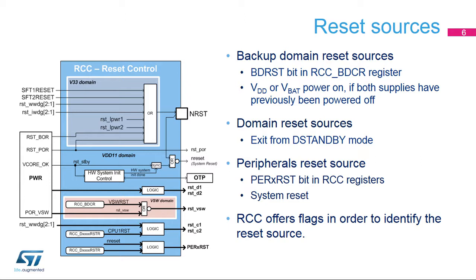The High-Speed External Oscillator (HSE) provides a safe crystal oscillator system clock. The HSE supports a 4 to 48 MHz external crystal or ceramic resonator, and also an external source in bypass mode. A clock security system automatically detects an HSE failure. When detected, a non-maskable interrupt is generated, and a brake input can be sent to timers in order to put critical applications such as motor control in a safe state. When an HSE failure is detected, the system clock is automatically switched to HSI, so the application software does not stop in case of a crystal oscillator failure.